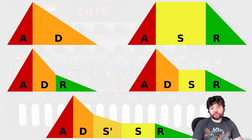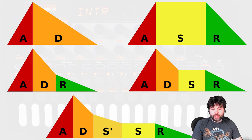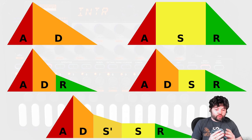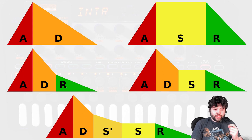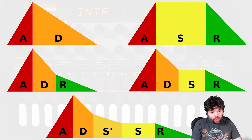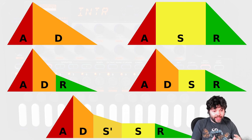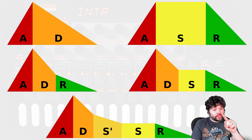The first envelope type is an AD envelope — attack and decay. You may ask, why is it attack-decay and not attack-release? Release is a phase of an envelope that occurs when a key is released. An attack-decay envelope, irrespective of how long we hold the key down — the gate length — will always go through the full attack and decay cycle.